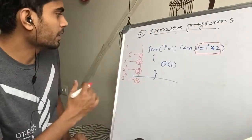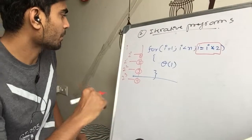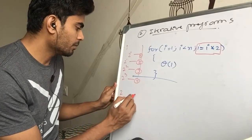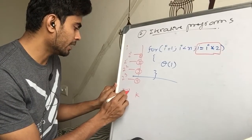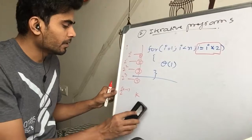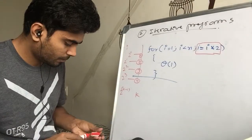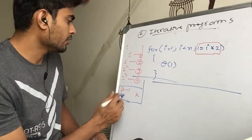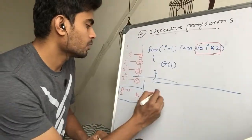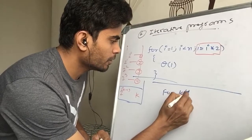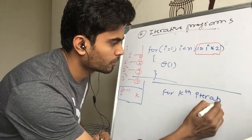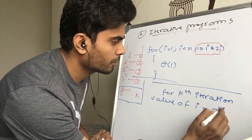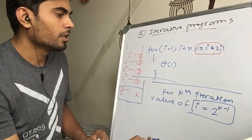For the fourth time, i equals 2 to the power 3. This kind of relationship exists throughout. So the generalization we can make is: for the kth term, the value of i is 2 to the power (k minus 1).